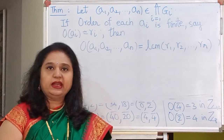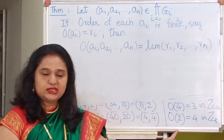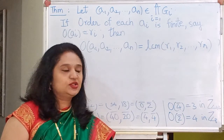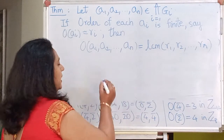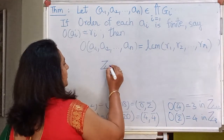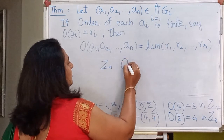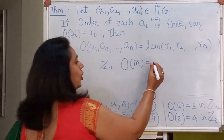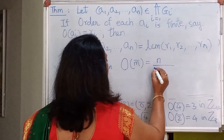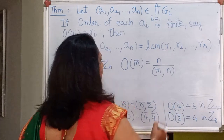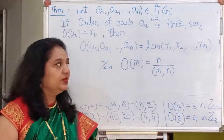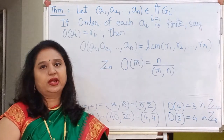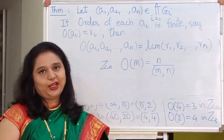Before we wind up, let me also remind you: in Zn, the order of M̄ in the group Zn is n divided by GCD(m, n). Keep this in mind as it will make solving problems on the direct product easier. That's all for now. Thank you.